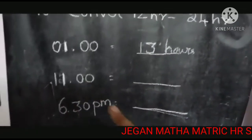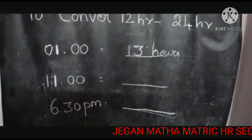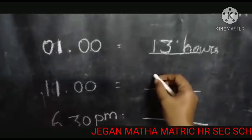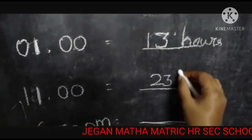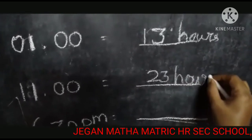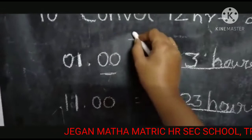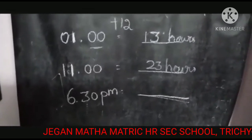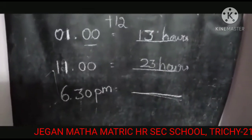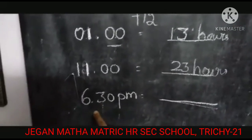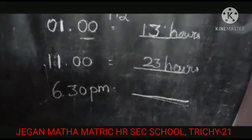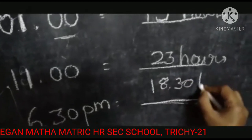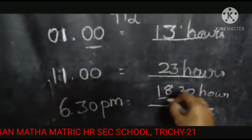For example, 11 PM in 12-hour time — to convert to 24-hour time, add 12: 11 plus 12 equals 23, so it becomes 23:00. Another example: 6:30 PM — add 12: 12 plus 6 equals 18, so the time is 18:30 in 24-hour format.